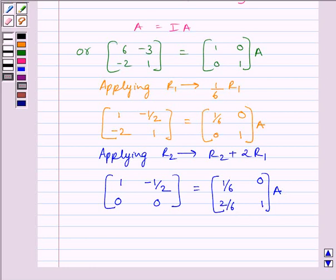Now, since the left-hand side matrix has all 0s in the second row, it is not possible to convert it to an identity matrix. Therefore, the inverse of the given matrix does not exist.